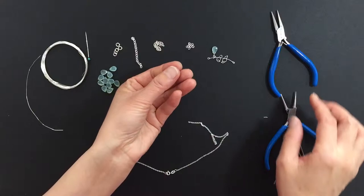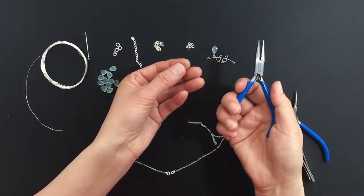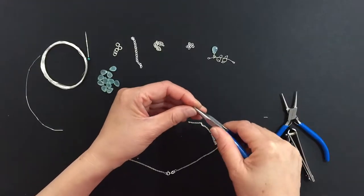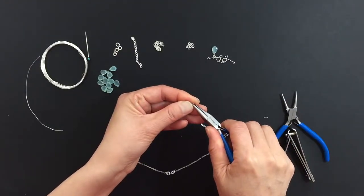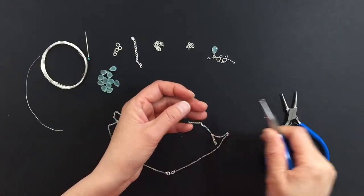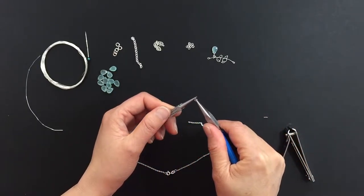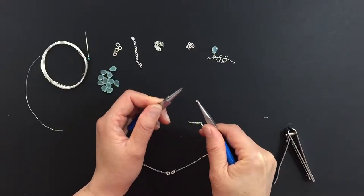Now you'll need a 3mm 22 gauge jump ring. Grab one side with the flat nose pliers and the other side with round nose pliers. Open the jump ring.